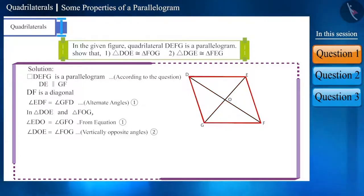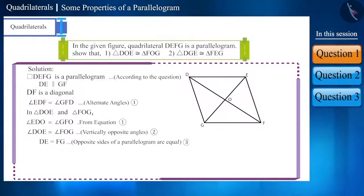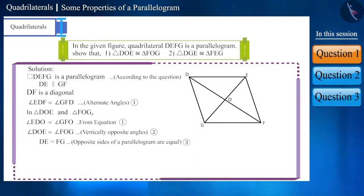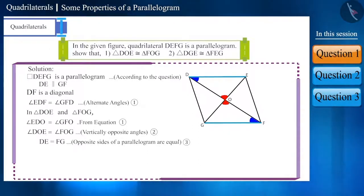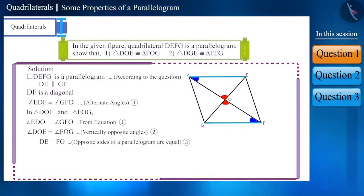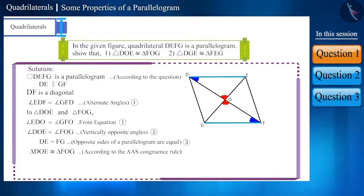We know that the opposite sides of a parallelogram are equal. Therefore, sides DE and FG will be equal. Looking at equations 1, 2, and 3 — in both these triangles, two angles and one side are equal, but this side is not the included side of these angles. So the triangles are congruent according to the AAS congruence rule.